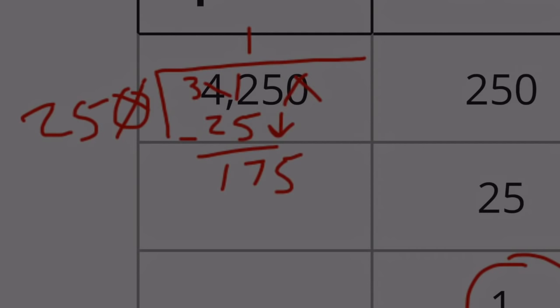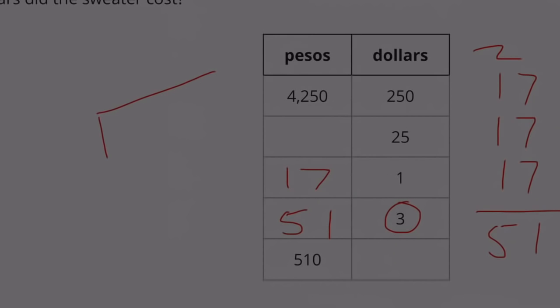So this would be 7. 7 times 25 is 175. We have nothing left over. So $1 is worth 17 pesos. If $1 is 17 pesos, then $3 would be 17 times 3.